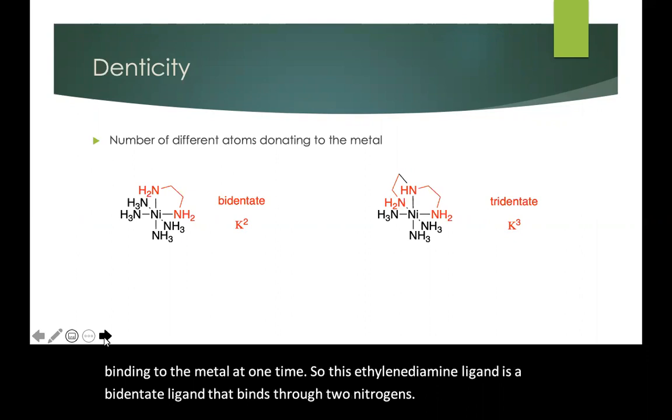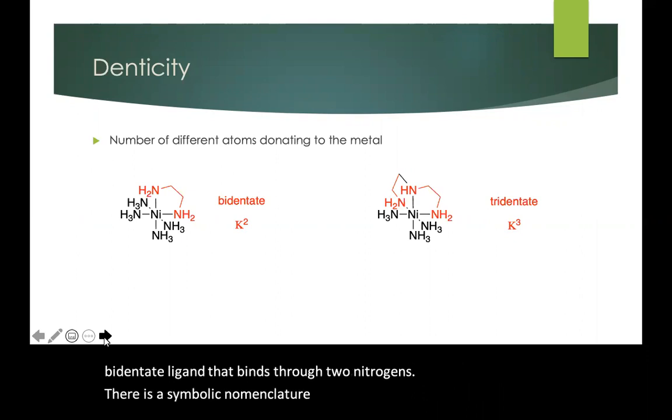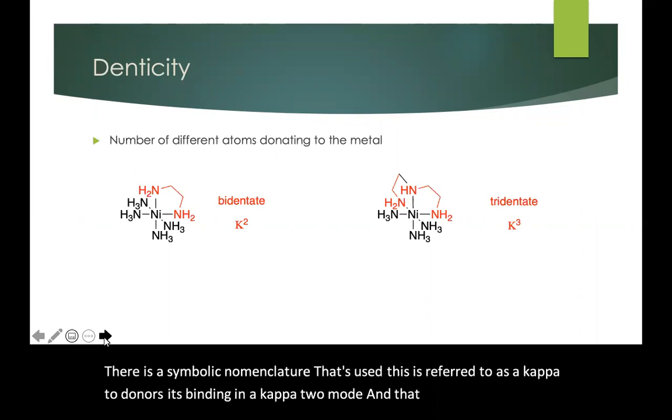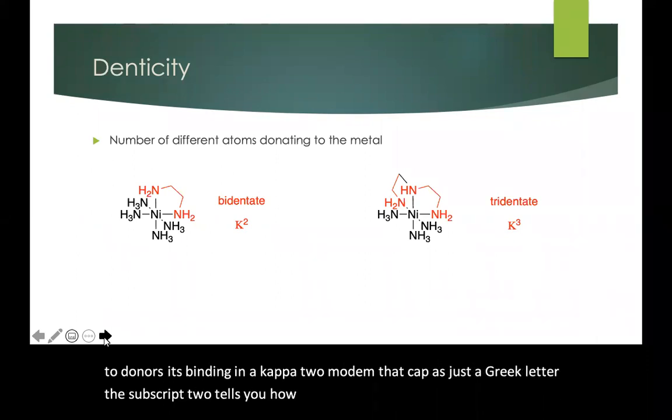There's a symbolic nomenclature that's used. This is referred to as a kappa 2 donor. It's binding in a kappa 2 mode and that kappa is just a Greek letter. The subscript 2 tells you how many different atoms are binding to the metal.